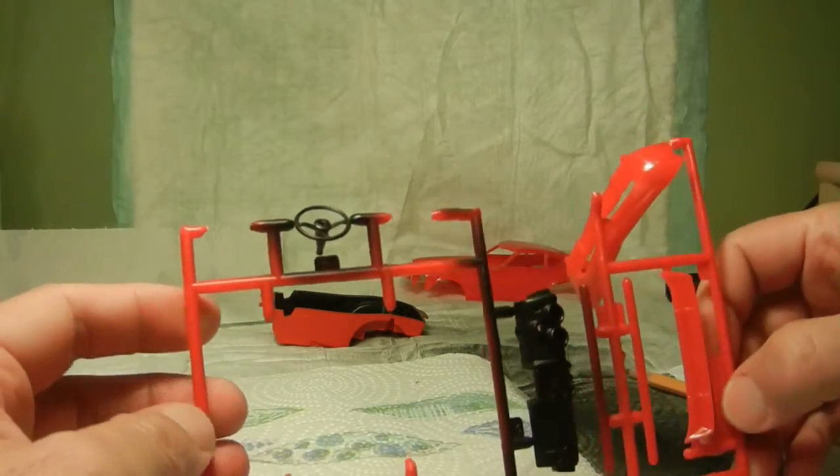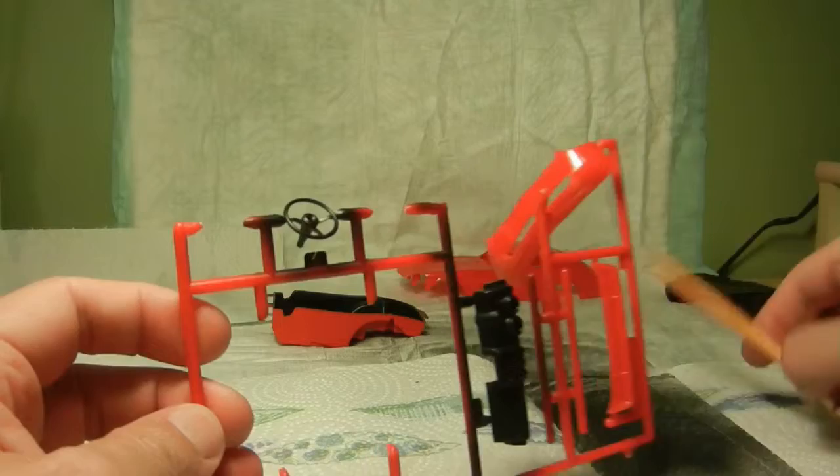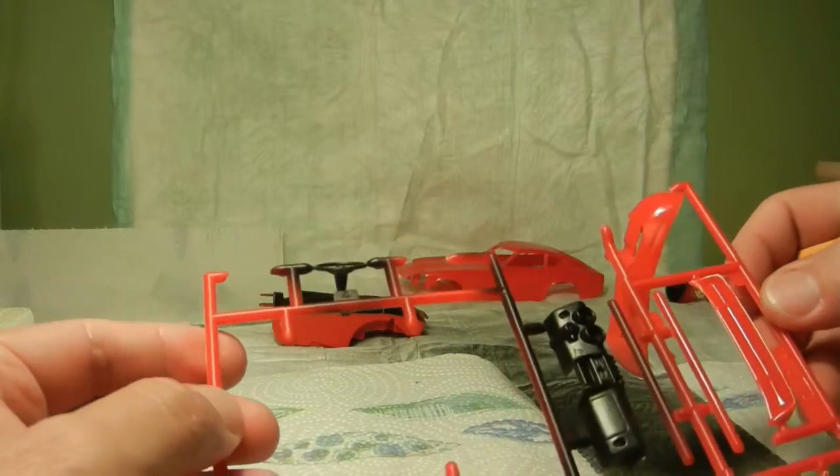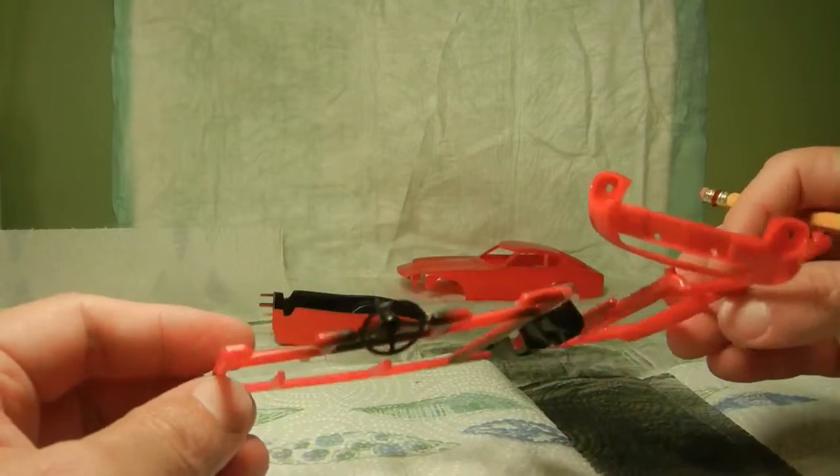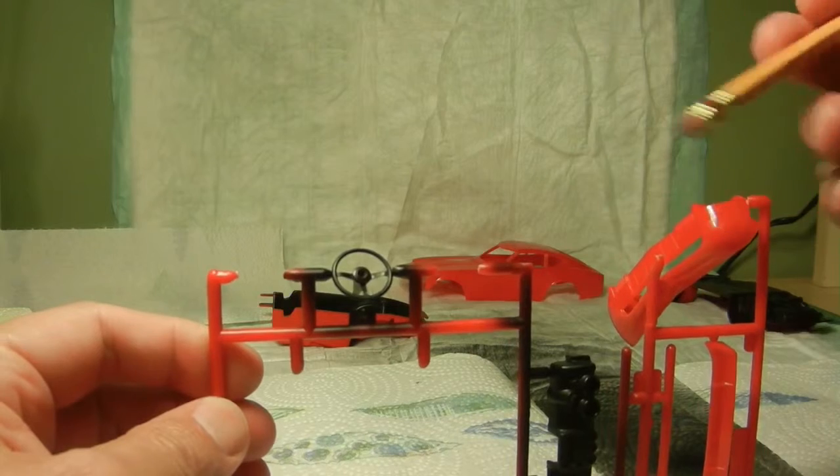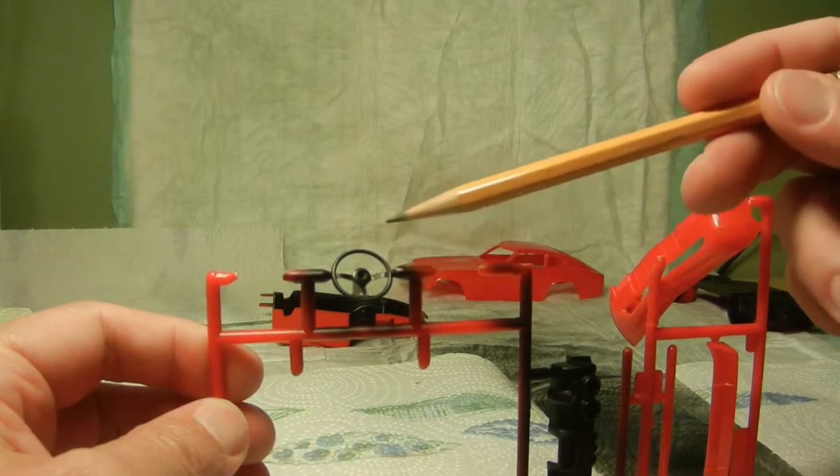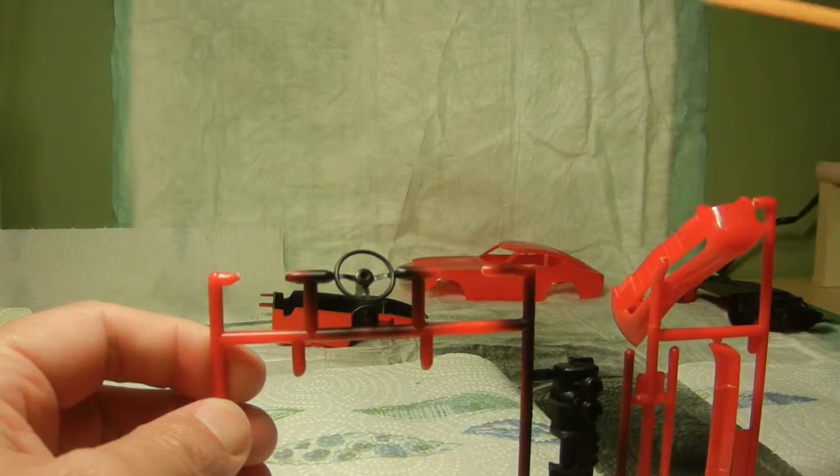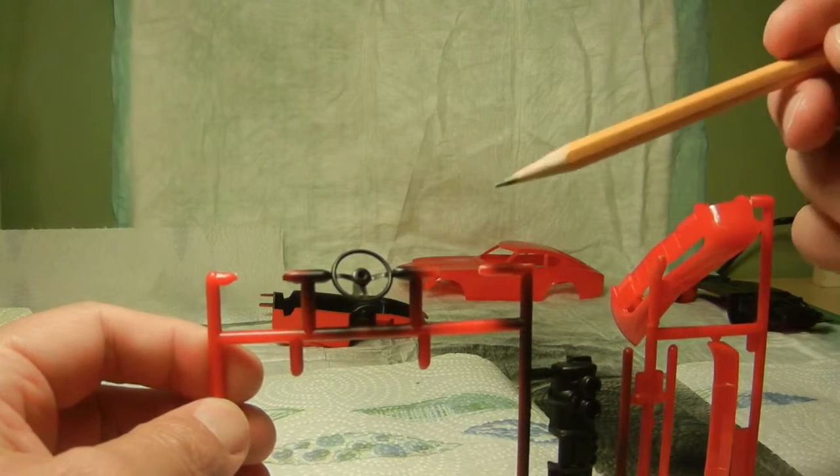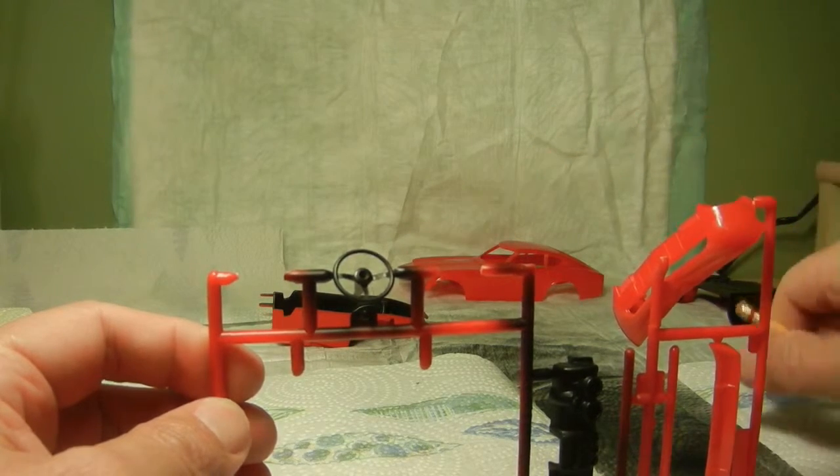As well as the steering wheel, I went ahead and painted that all black for right now. I'll probably go back and do a little bit more detail work around the steering wheel itself, maybe a reddish-brown color and kind of go from there.